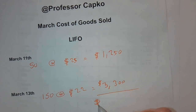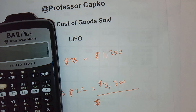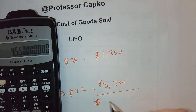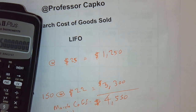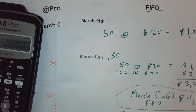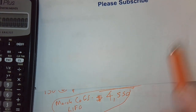Total LIFO cost of goods sold for March: $1,250 + $3,300 = $4,550. Compare that to FIFO, which gave us $4,200. There's a marked difference between cost of goods sold under LIFO versus FIFO.